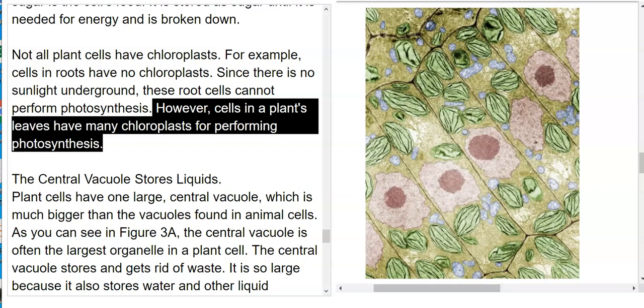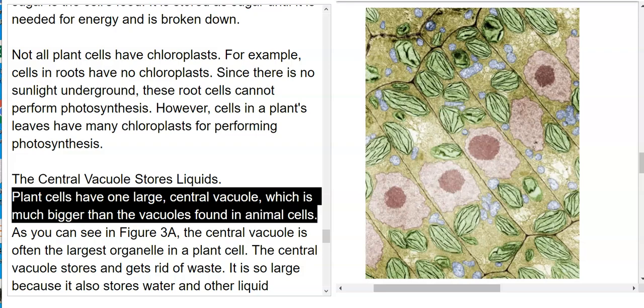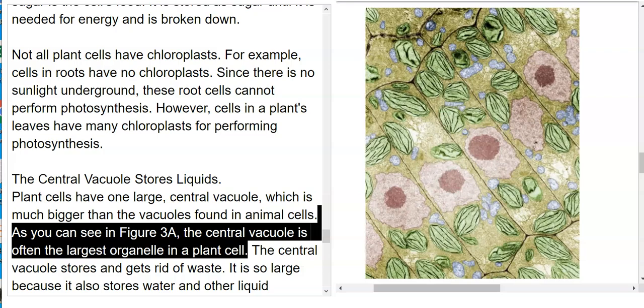The central vacuole stores liquids. Plant cells have one large central vacuole, which is much bigger than the vacuoles found in animal cells. As you can see in figure 3a, the central vacuole is often the largest organelle in a plant cell.